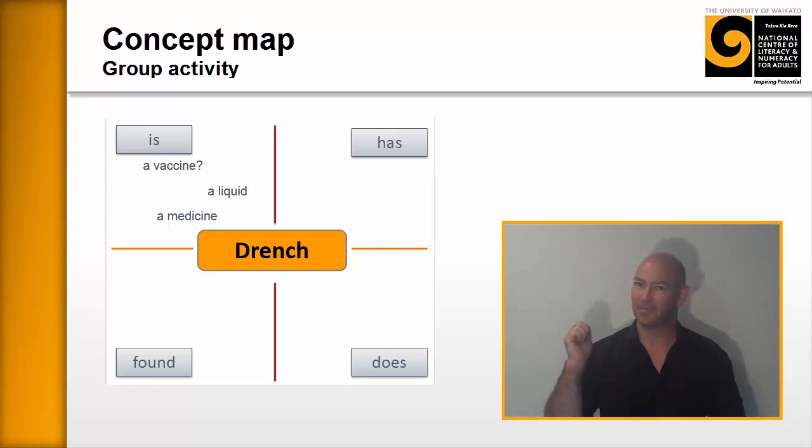And then they're going to move on to has. Drench has chemicals, a dosage rate, drench has instructions, drench has a time frame and so on and so on.